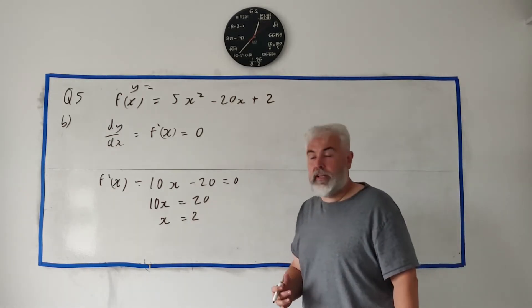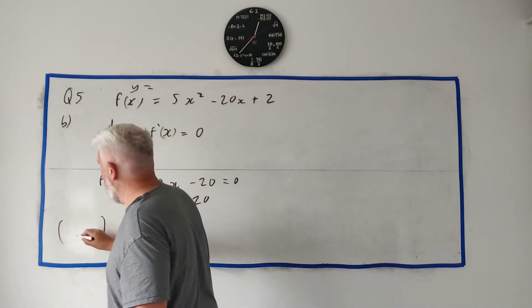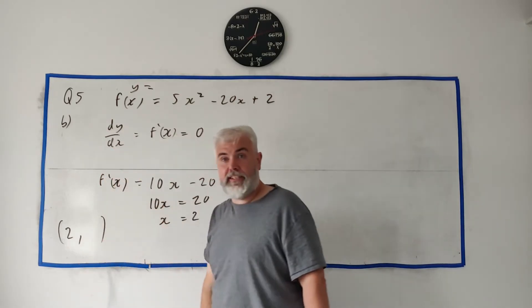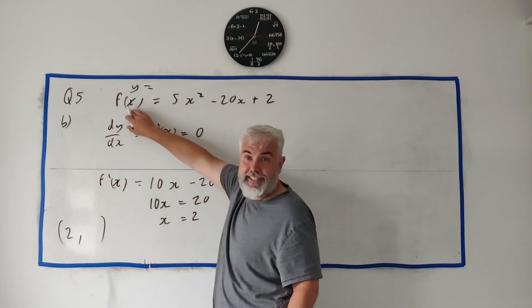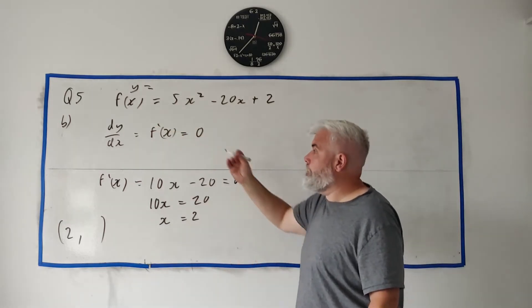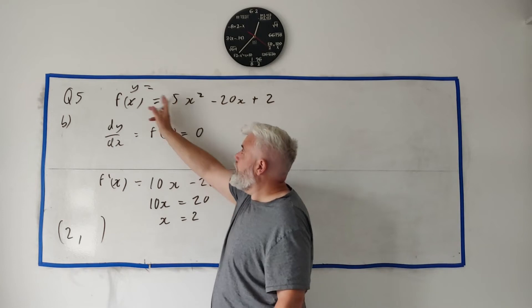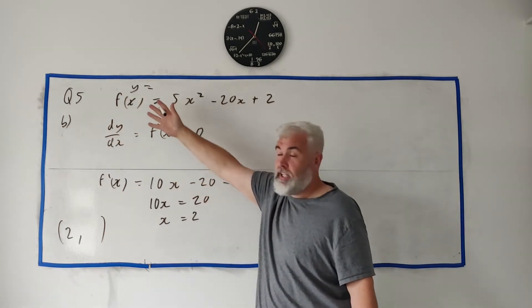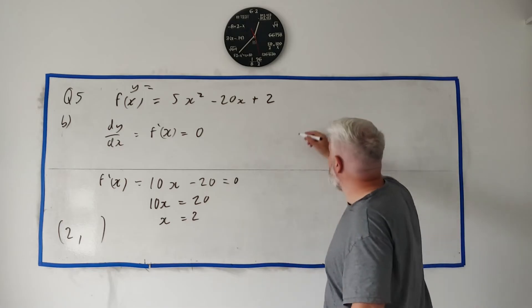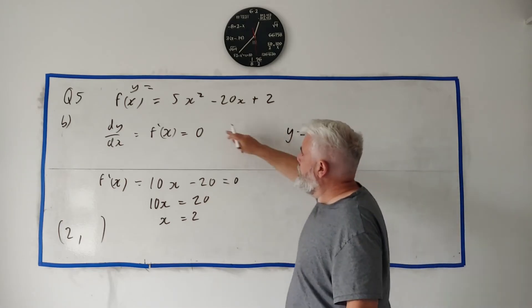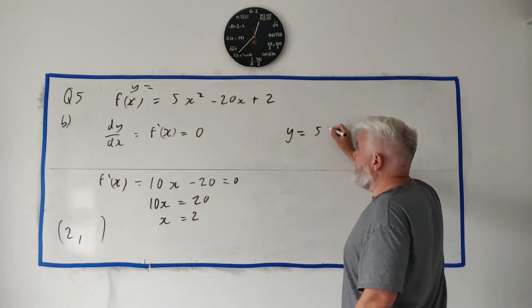You're nearly there. They wanted the point, they wanted the coordinates, they want x and y. We know what x is, we need to know what y is, and remember y is the same as f(x), it's just the answer to the function when we put in x, y comes out.